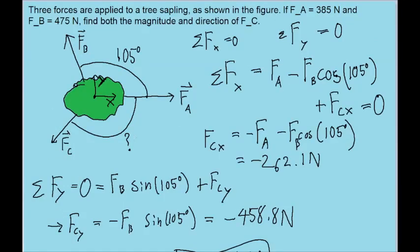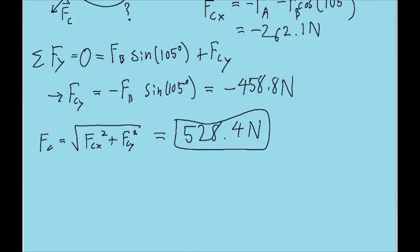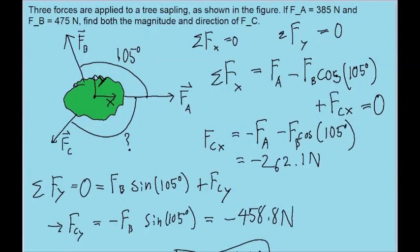The problem also asks us to find the direction. So we need to figure out what this question mark angle is. Now when we have two components of a force or two components of any vector, the way we find its angle is by taking the inverse tangent of the y component divided by the x component. This is the common formula for finding the angle when you have two components of a vector. But there's one very important thing that you need to understand about this equation. This equation will give you an angle, but the angle that it gives you will be between the resultant vector and the x axis that it's closest to.